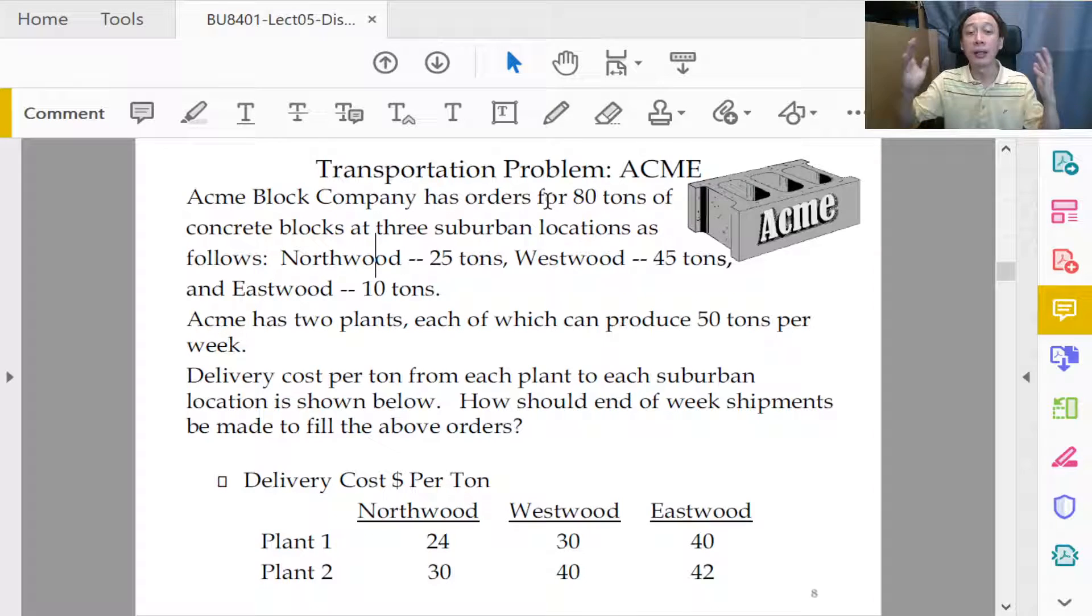And then are the customers interested in only the quantities? Then if so all the characteristics have matched our pattern for transportation problem. Then we know it is transportation problem and we whip up the model right away. So the 80 tons of concrete blocks we don't know how to understand that yet. We can see that it is at three suburban locations.